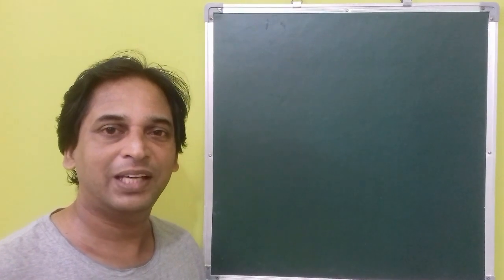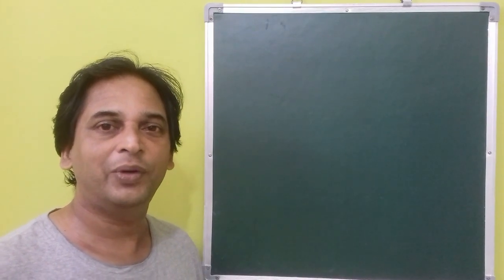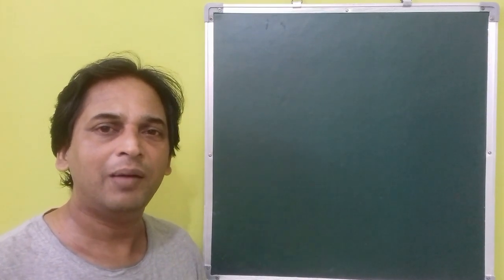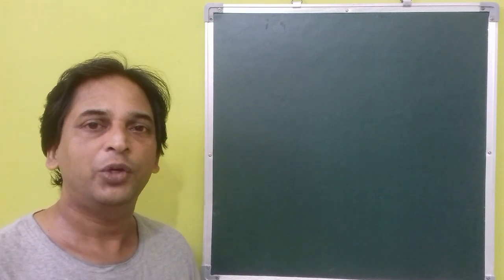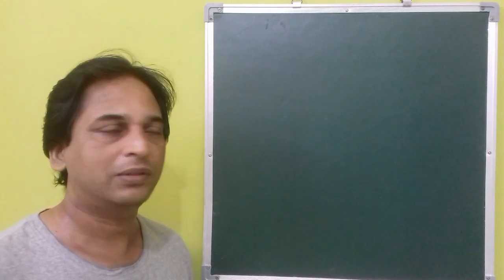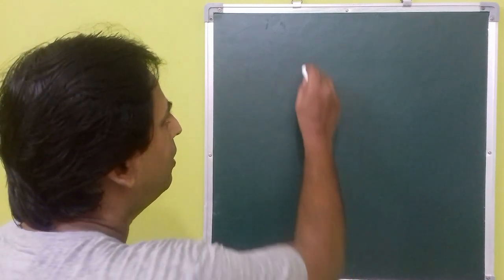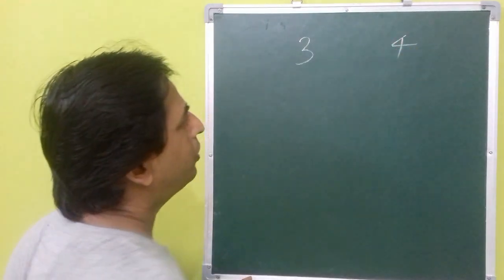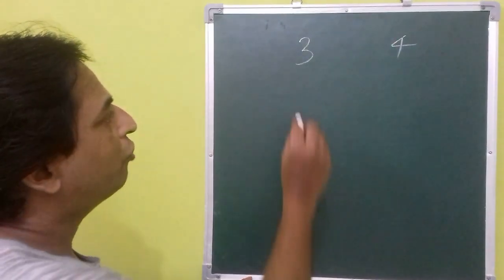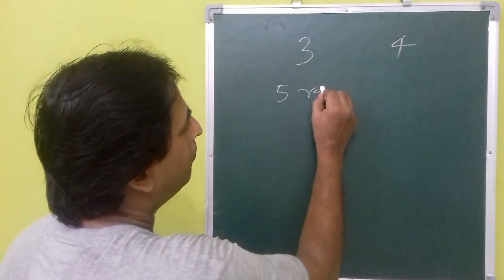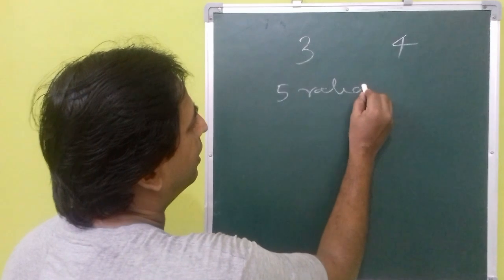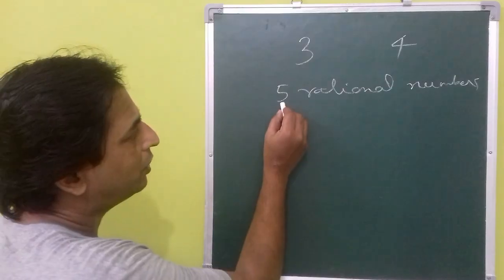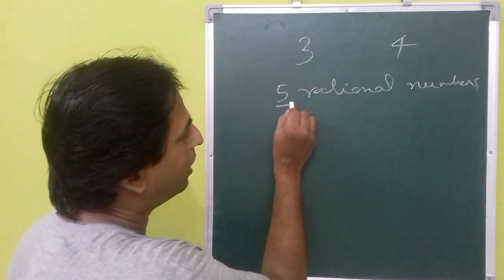Hi, this is Thomas, welcome to my channel. In this video we will learn how we can find a number of rational numbers between two rational numbers. For example, you have three and four and you need to find five rational numbers between three and four.